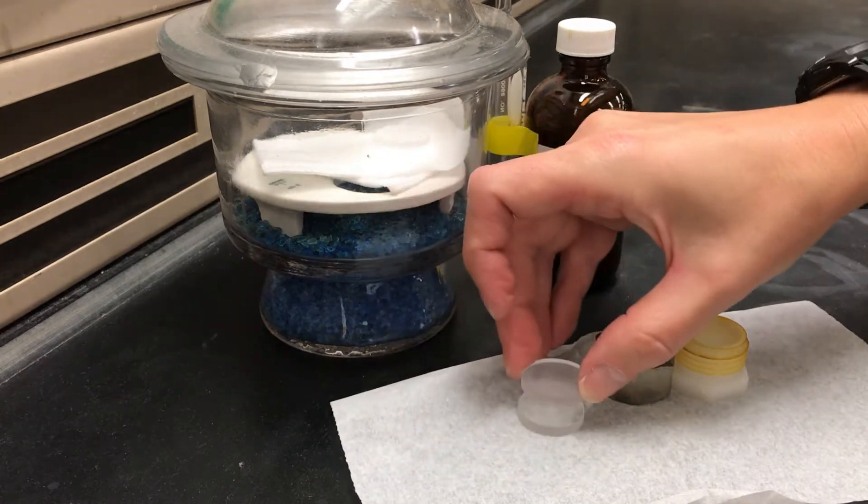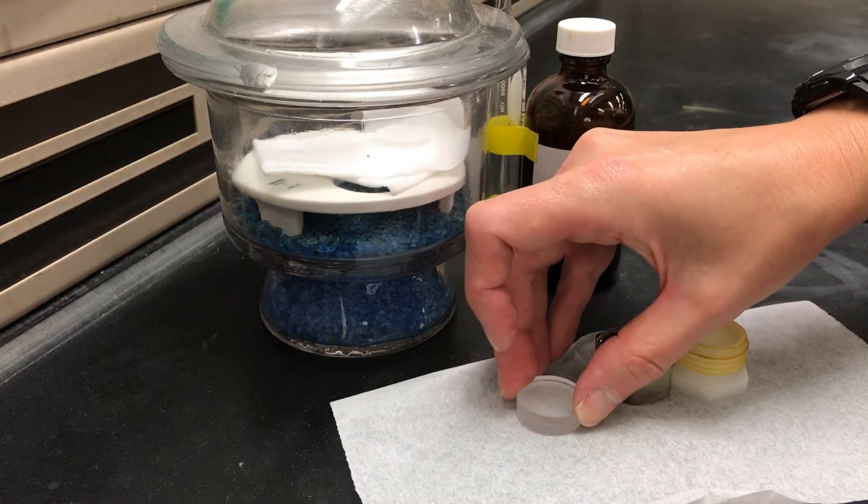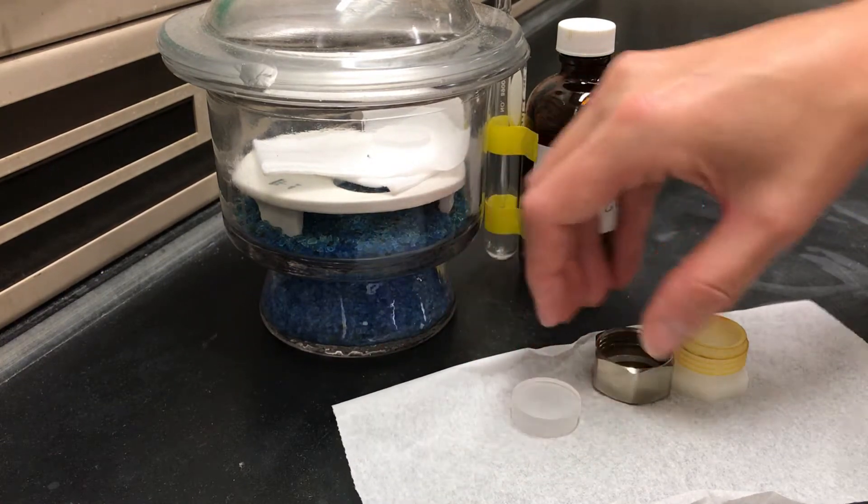Then you take the second plate and you put that over top of the first and so that spreads the sample out into a thin layer.